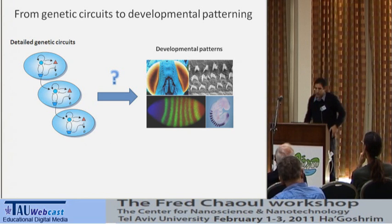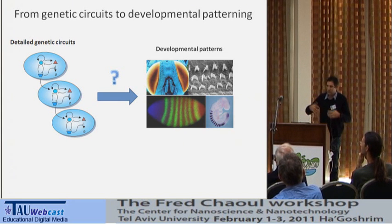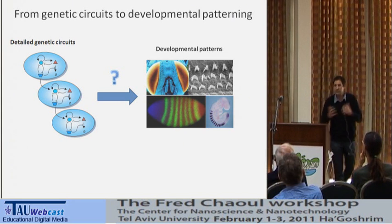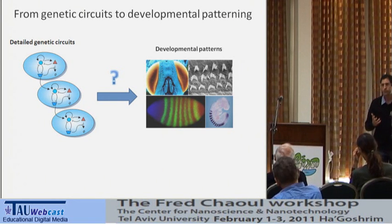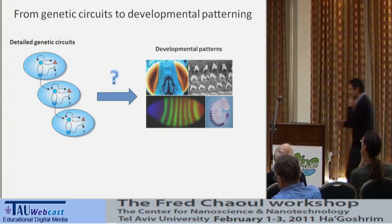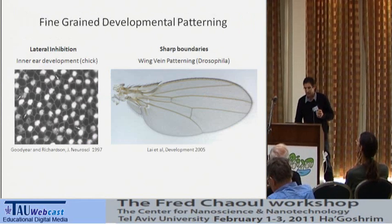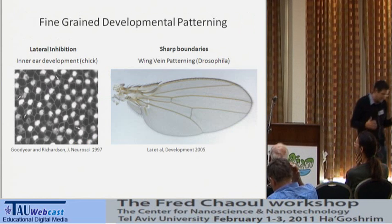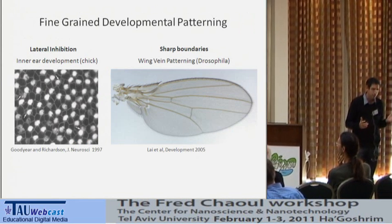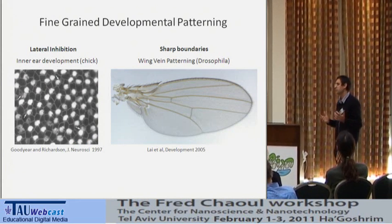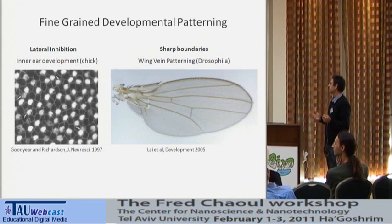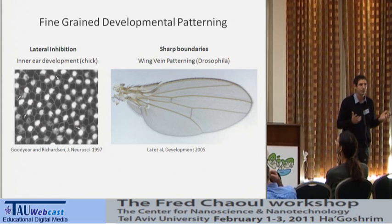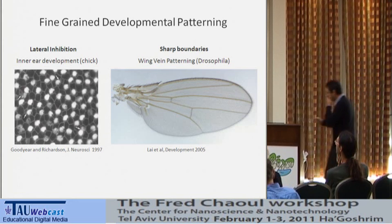This is a very general problem in biology. We also don't understand how the different components within these circuits are optimized to do the job as components of a circuit. I'm going to try to address some of these questions in the context of one class of developmental patterning process, which I call fine-grained developmental patterns — patterns in which neighboring cells adopt different fates.